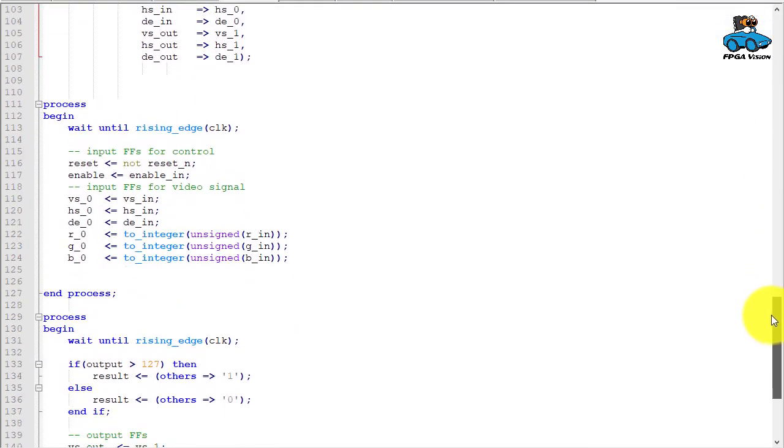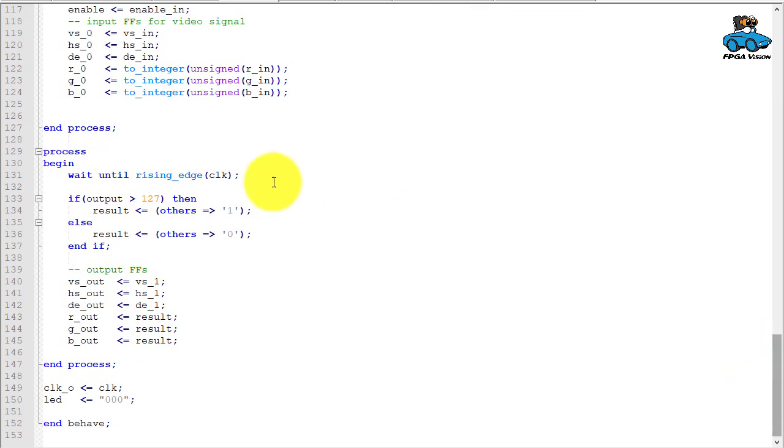Here we have our output processing. In this case it's relatively easy. If the output is larger than 127, the result is set to everything 1. This is the RGB value, so this is white. If everything is 0, result set to 0, then the output pixel is black.